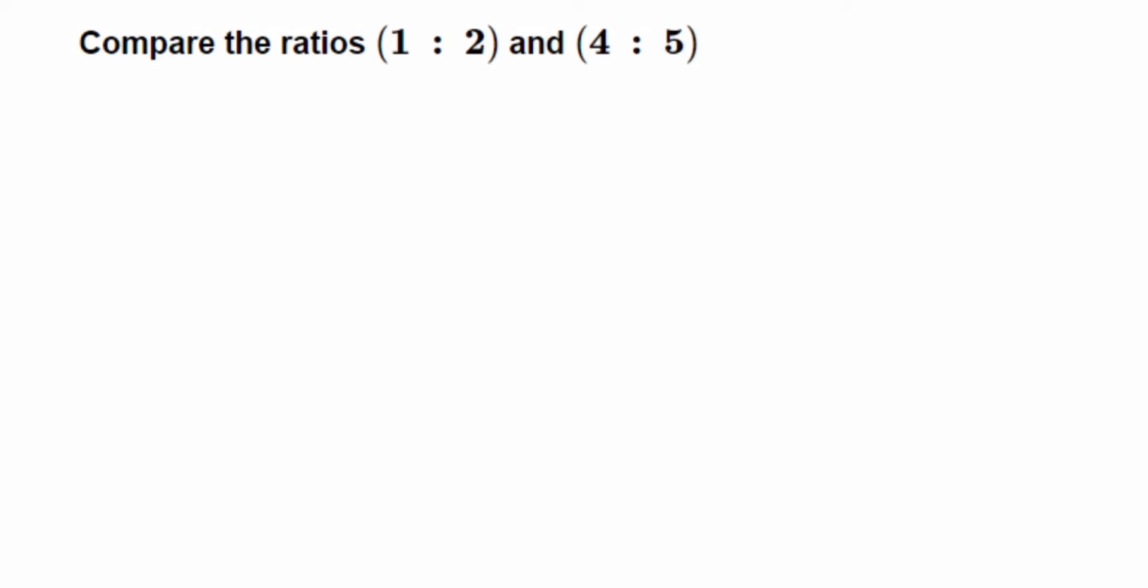Let us solve this. The first ratio given is 1 is to 2, which can also be written as 1 upon 2. Similarly, 4 is to 5 can also be written as 4 upon 5.